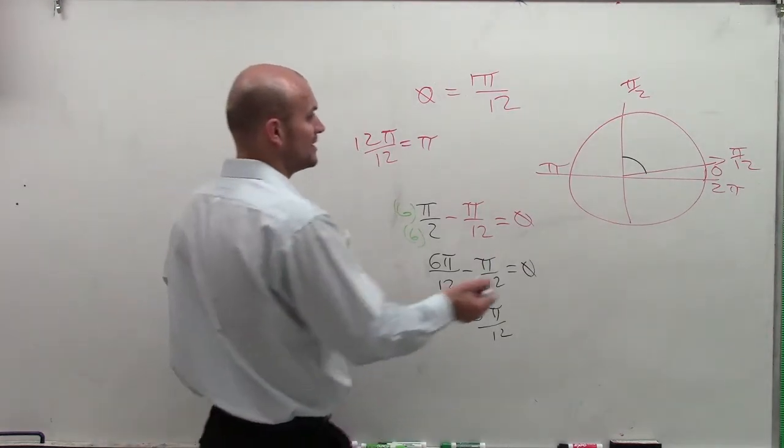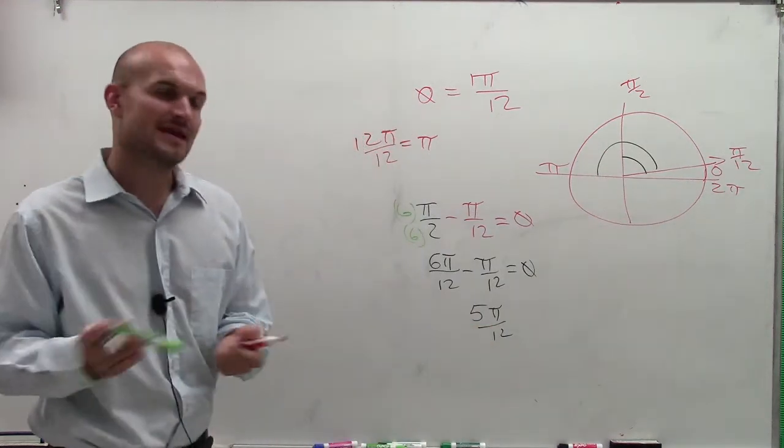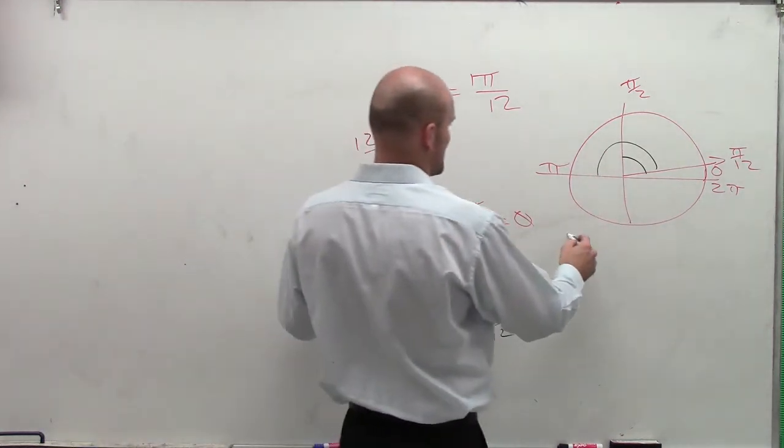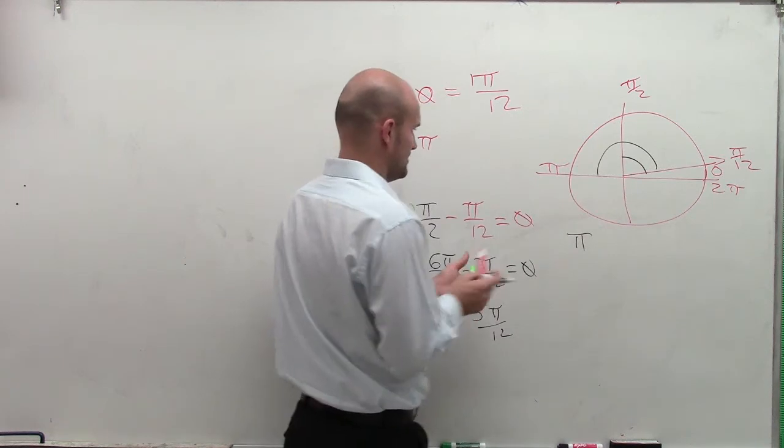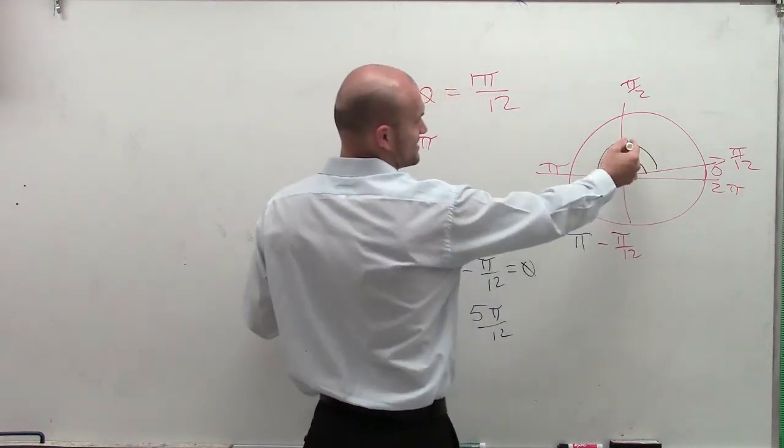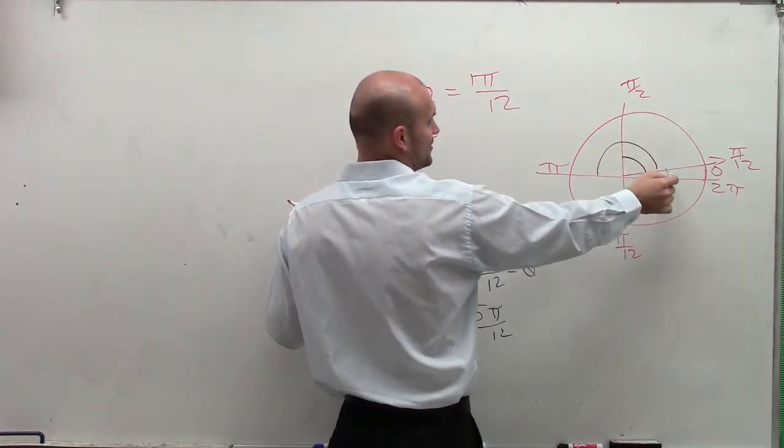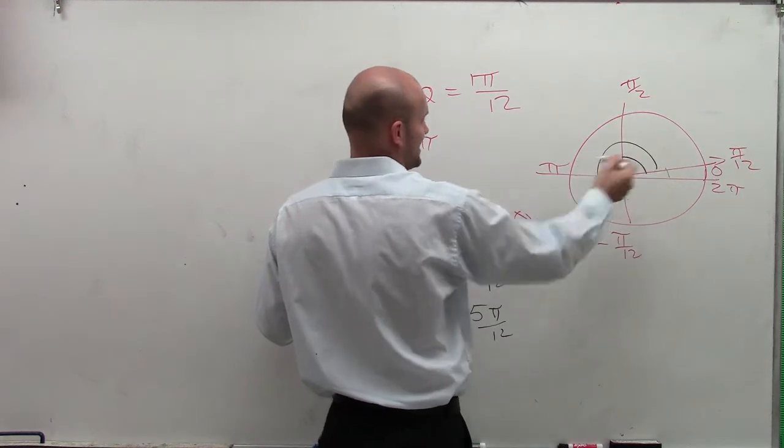However, supplementary is what angle plus pi over 12 is going to give me 180 degrees. So now we do the same thing, but now I'm going to say pi minus pi over 12 is going to equal me this angle, right? Pi all the way around minus this angle is going to leave me with my remaining angle.